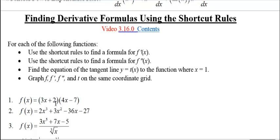Here we have several functions. Each one, we're going to try to find the first derivative and the second derivative formulas. Then, we're going to try to find the equation of the tangent line to the original function, where x is 1, assuming it's defined there. And then, we're going to graph all of those things, the tangent line, the original function, the first derivative, and the second derivative on the same coordinate grid.